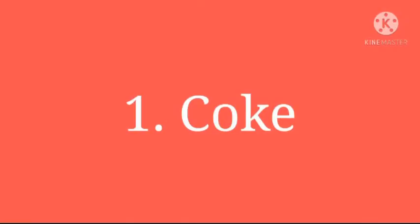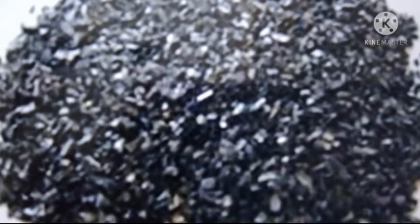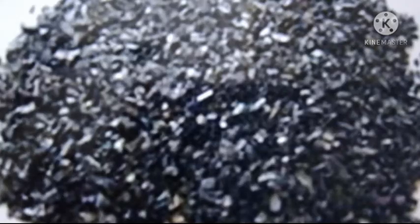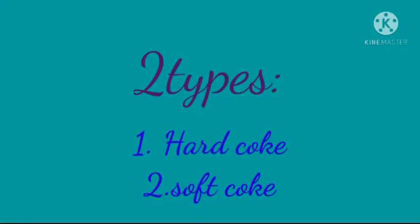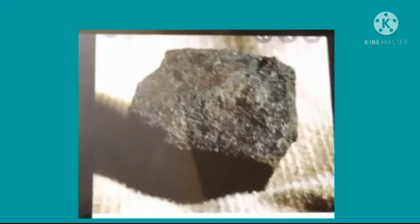The first product is coke. Coke is the amorphous form of carbon derived from coal. It is a black porous solid substance that burns without smoke. It contains about 98% carbon, acts as a good reducing agent, and is a bad conductor of heat and electricity. There are two types of coke: hard coke and soft coke.